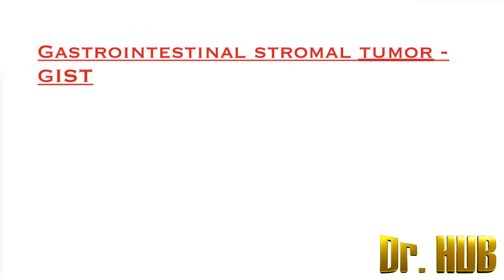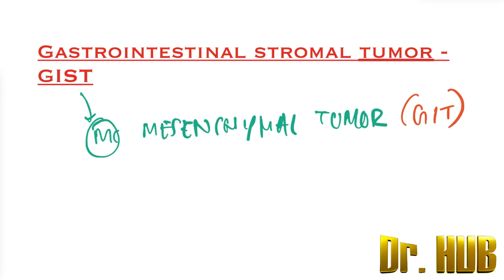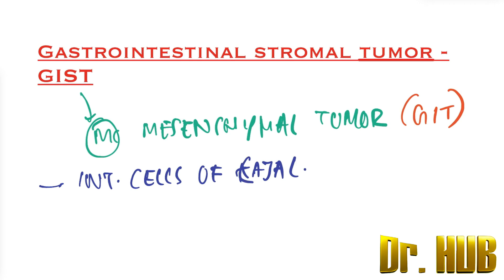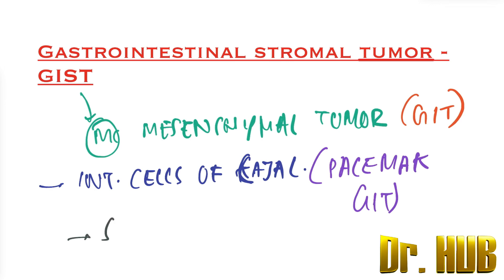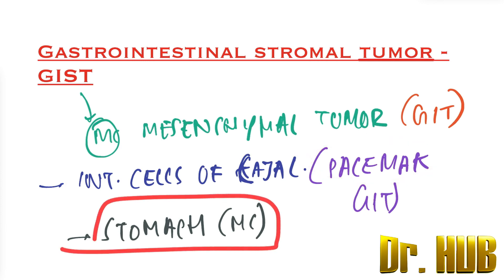Gastrointestinal stromal tumor — that is a GIST — is the most common mesenchymal tumor of the GIT. It arises from the interstitial cells of Cajal, which are the pacemaker of the GIT. The stomach is the most common site.